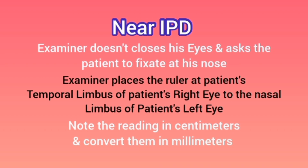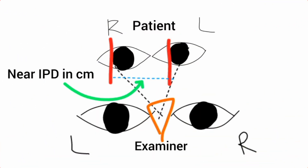For near IPD, we want the eyes to converge. The examiner asks the patient to fixate on the examiner's nose. When the patient looks at the nose, the eyes converge slightly. The examiner then places the ruler from the temporal limbus of the patient's right eye to the nasal limbus of the patient's left eye and notes the reading in centimeters, then converts it into millimeters.